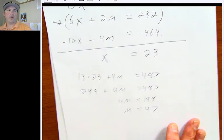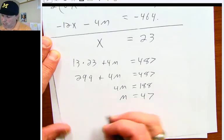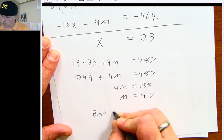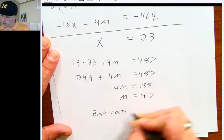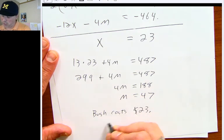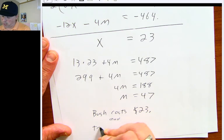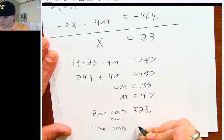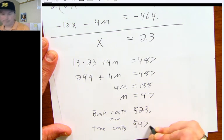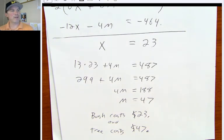Make sure you answer the question at the end. We're talking costs. So a bush costs $23 and a tree costs $47. And that is number 24.